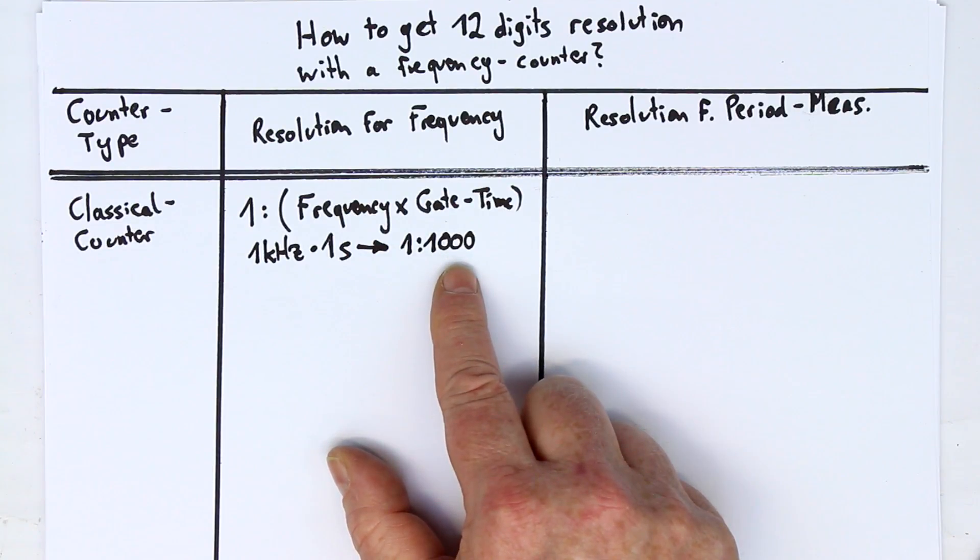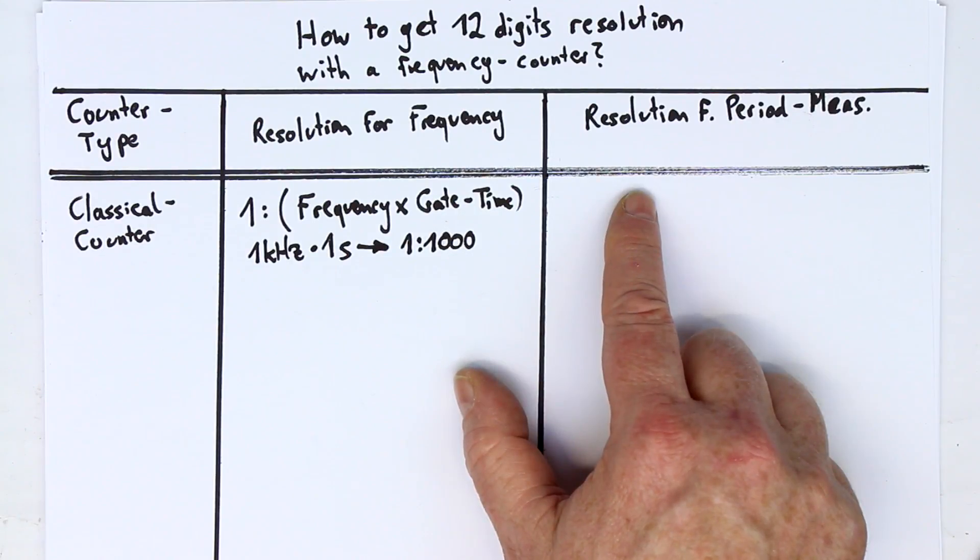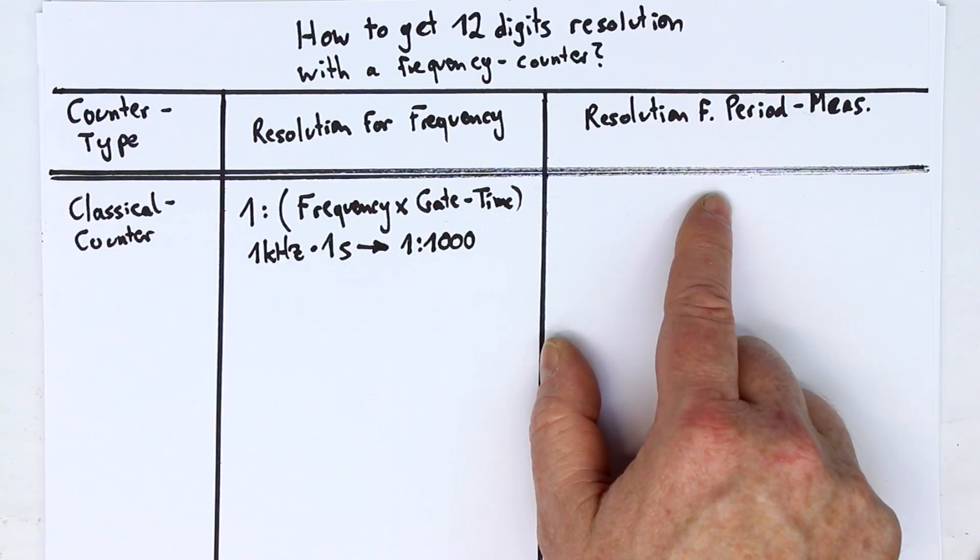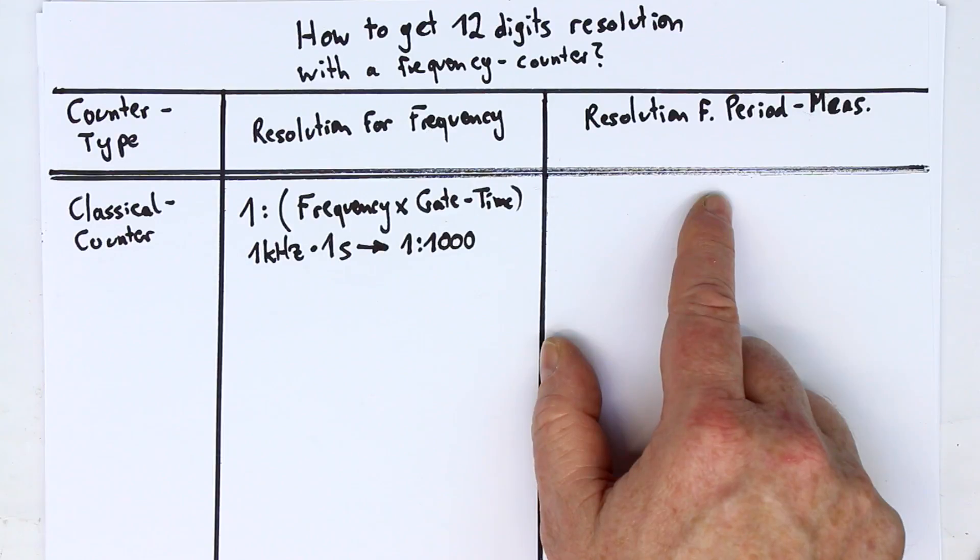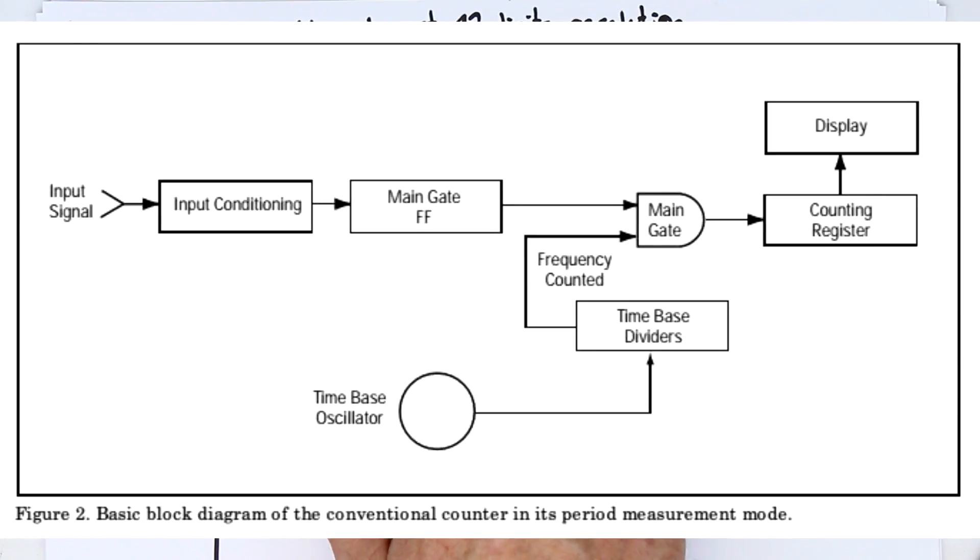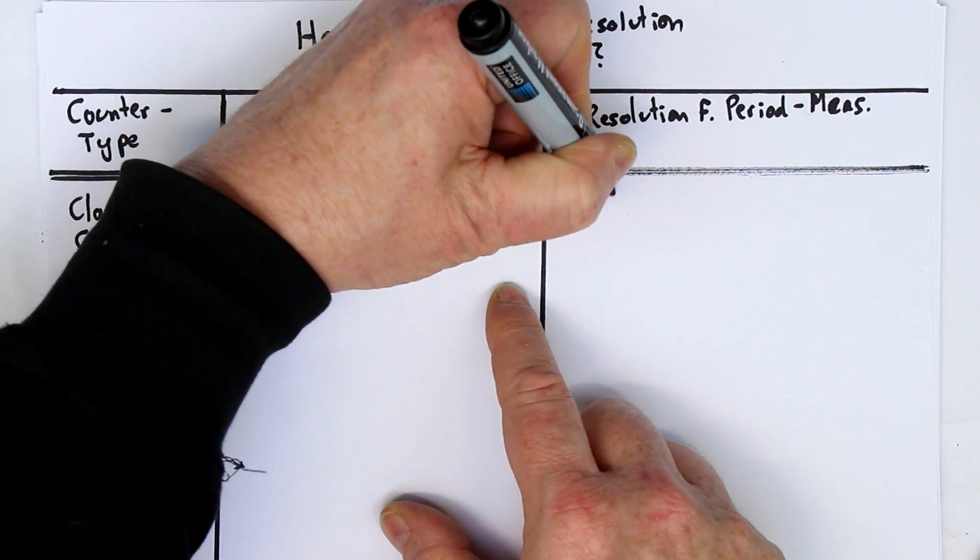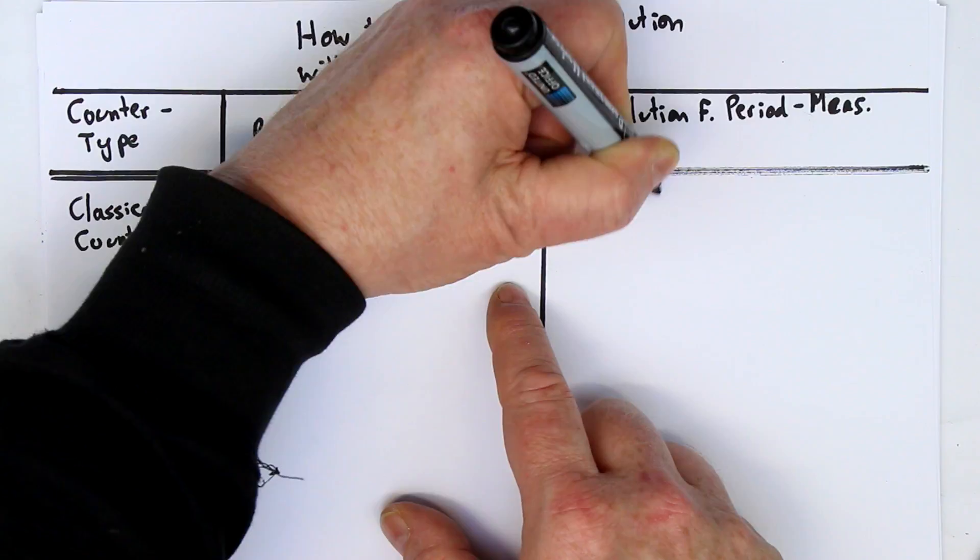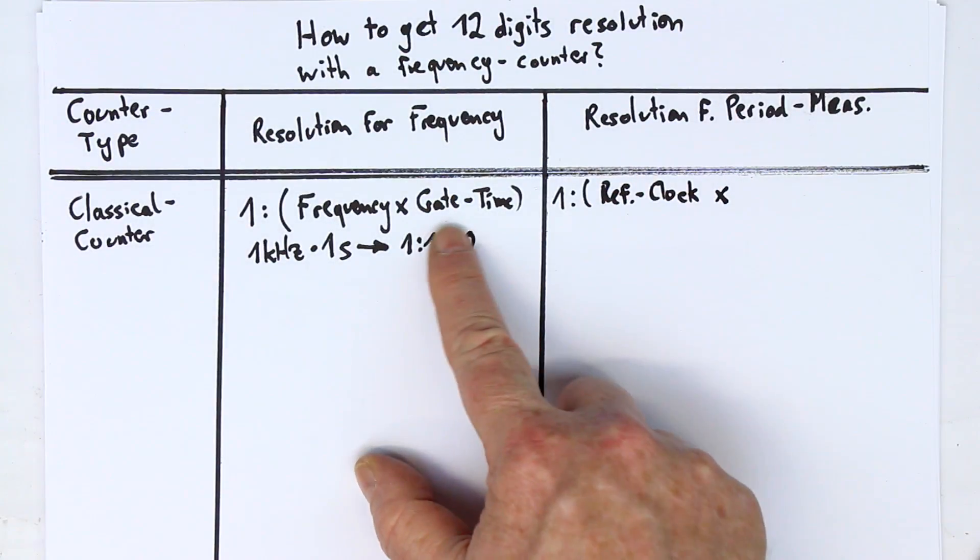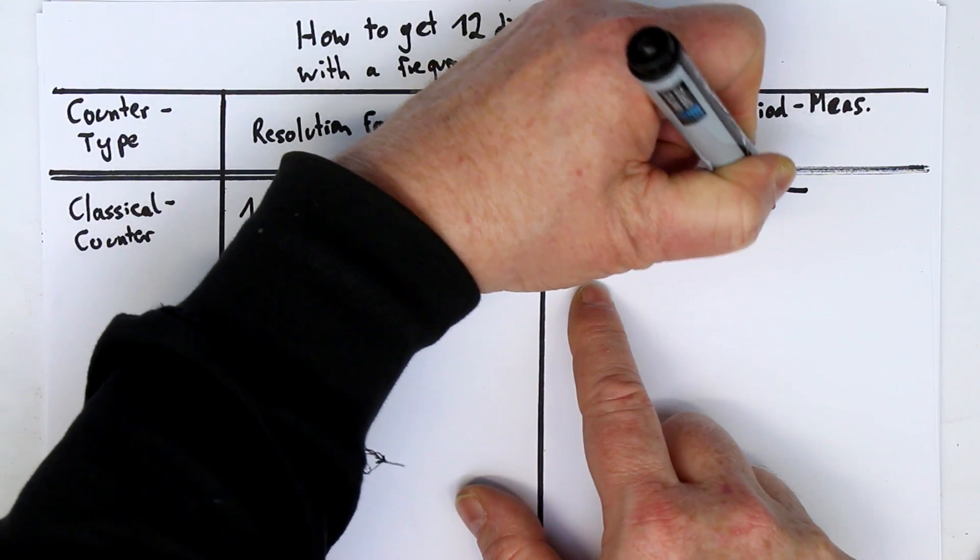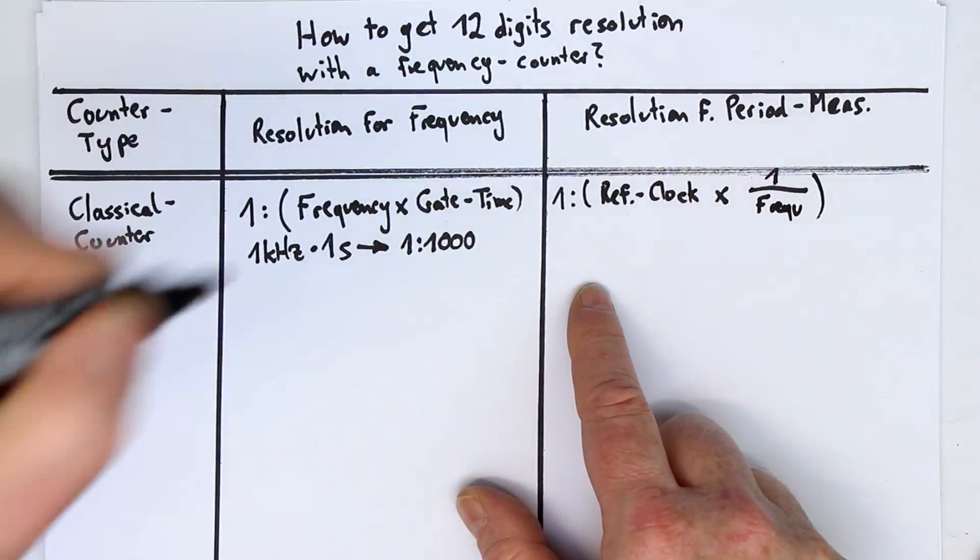So that's the disadvantage of the classical counter. Let's take a look if it gets any better if we, instead of measuring the frequency, measure the period with a classical counter. How is this done? You simply swap the two inputs of the counter. You have normally the frequency input and the gate time input, and now you put your reference clock where you usually have your frequency input, and your frequency becomes the gate timer. And so there, we have a resolution of 1 divided by (reference clock frequency times 1 over the frequency).